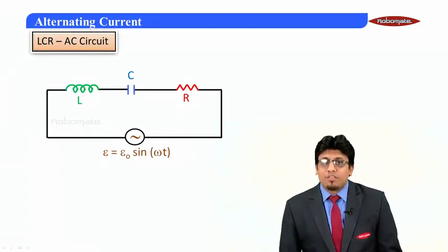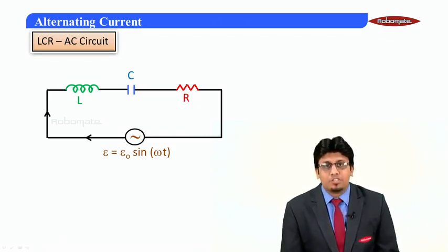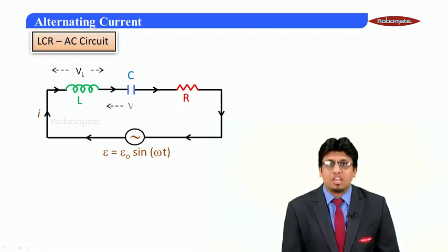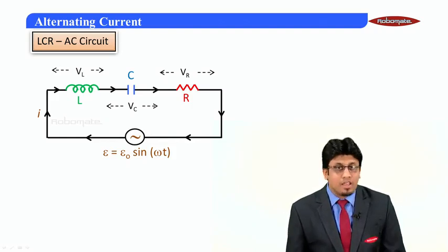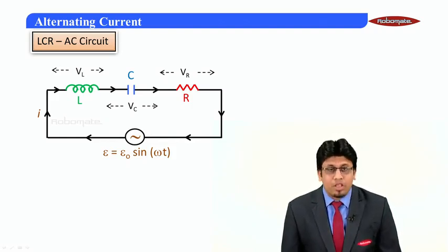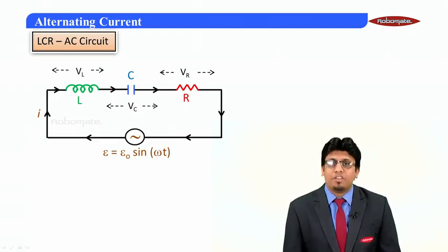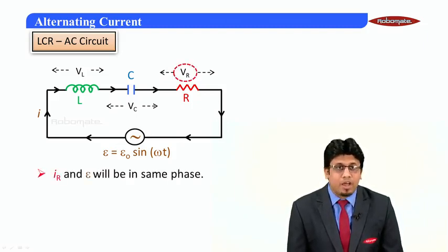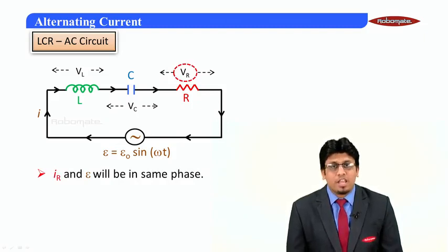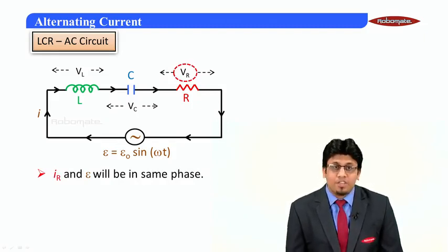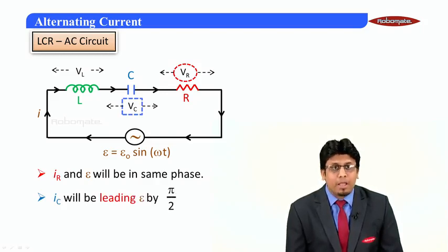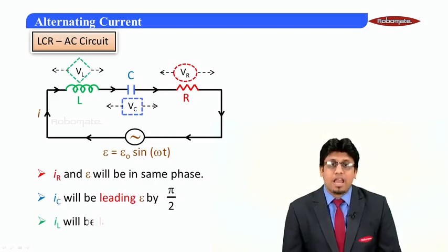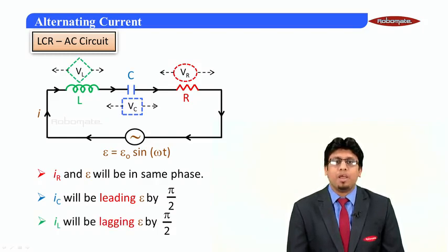Now let's assume that at a certain instant of time the current is flowing in the clockwise direction, and the potential difference across these three elements can be written as VL, VC, and VR. Now what we already know from our previous discussions is that in case of a resistor the current and EMF are in same phase, whereas in case of a capacitor the current leads the EMF by π/2, and in case of an inductor the current is lagging behind the EMF by π/2.